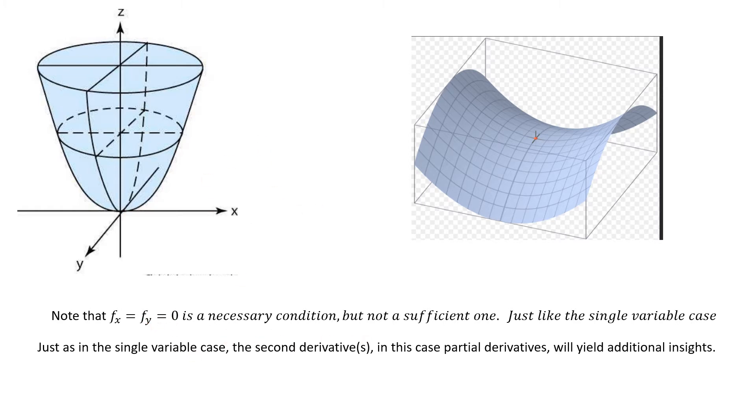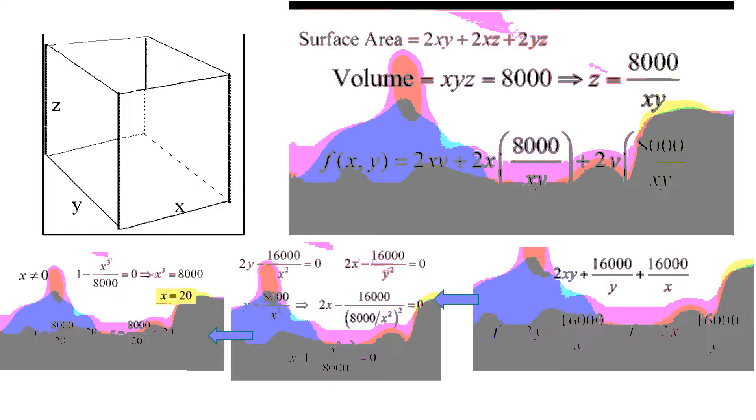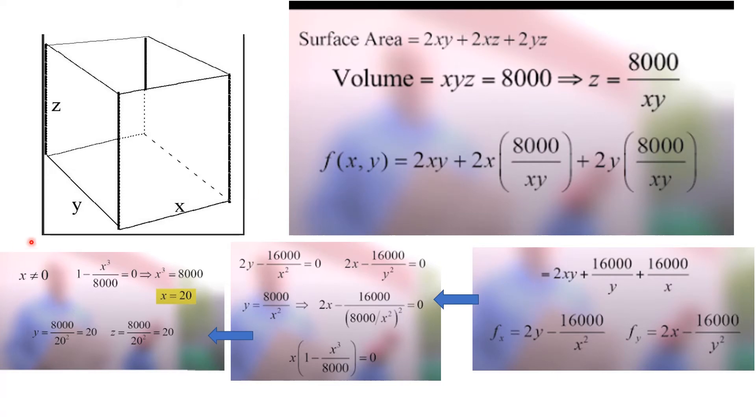Let's apply that to our introductory problem. So, here's our box. I'm calling this dimension x, this dimension y, and the height I'm calling z. The volume was constrained to be 8,000. That means x times y times z is 8,000. And later on, I'm going to want to reduce the number of variables. So, I'm going to solve for z. And if I solve for z, z was equal to 8,000 over xy.